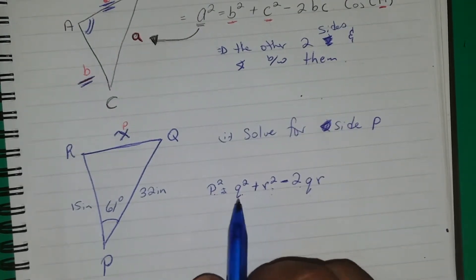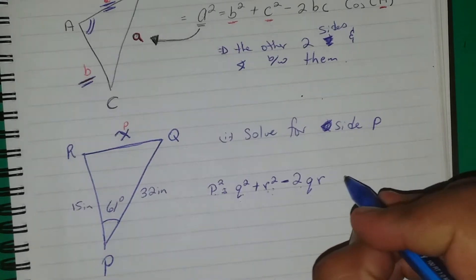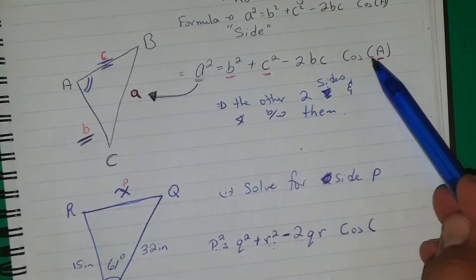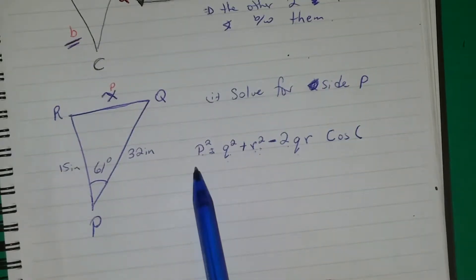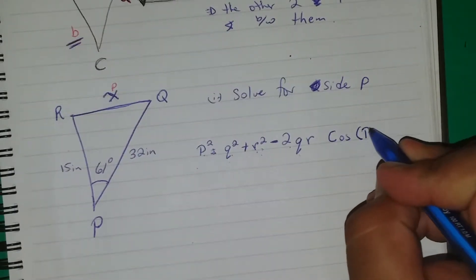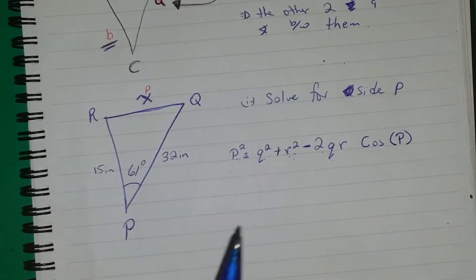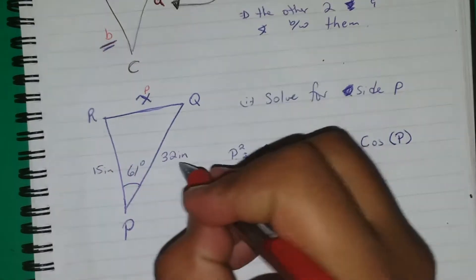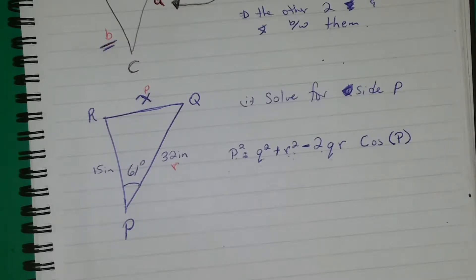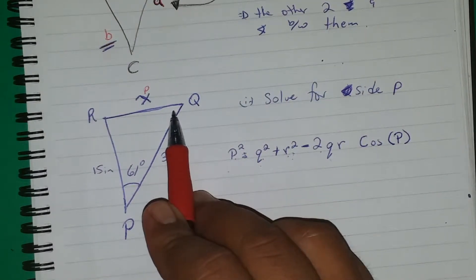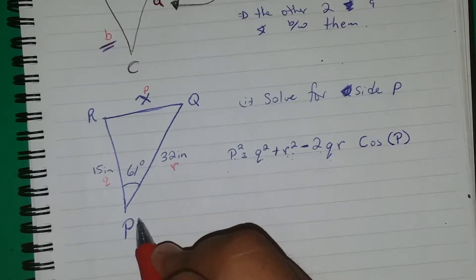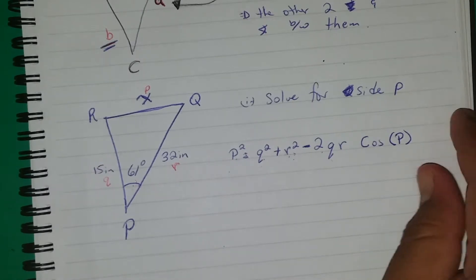The cosine term always remains. Notice: if you're solving for side A you have angle A, so since we're solving for side P we have cosine of angle P. Now we identify the labels — angle R is opposite side R (which is 32), angle Q is opposite side Q, and angle P is opposite side P.